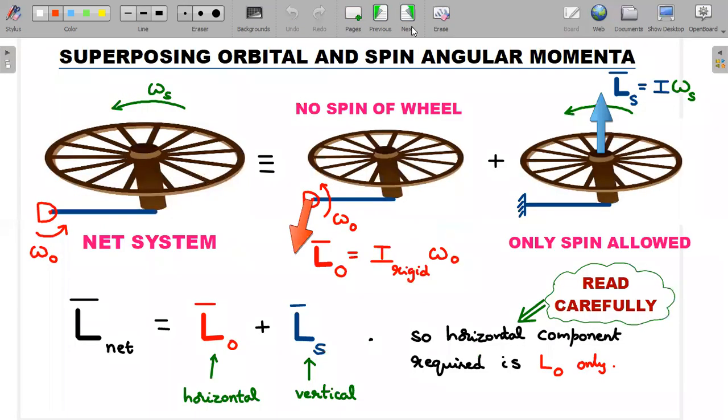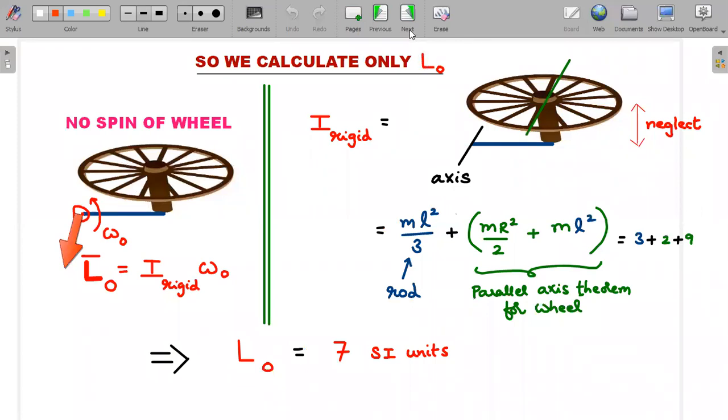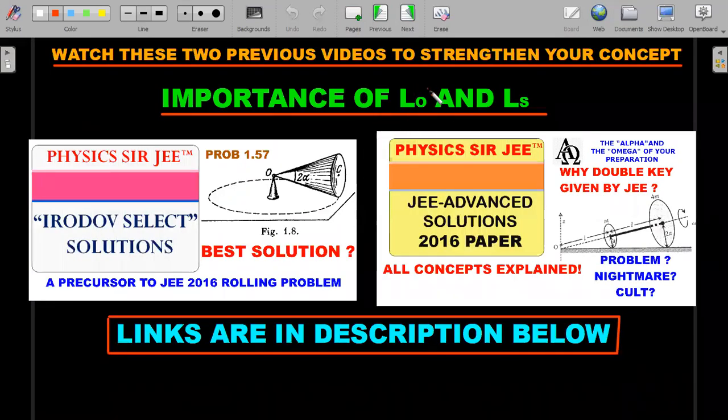For those who are still slightly struggling, I would request there are two previous videos in this particular channel on the concept of superposition of orbital angular momentum and spin angular momentum. This is the first video that I would request you to watch, which is the Irodov 1.57 question on the concept of orbital angular momentum and the spin of a cone, and immediately after that the solution of the famous problem of 2016 rolling double cone situation. Links of both these videos are in the description below.